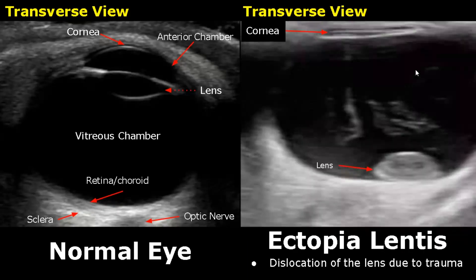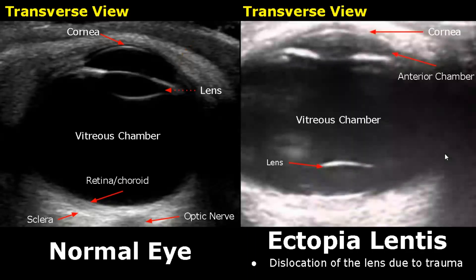Ectopia lentis refers to dislocation of the lens, and it mostly occurs due to trauma. Here we see the lens in the posterior aspect of the vitreous chamber. This is another case of ectopia lentis — we see the lens displaced from its original location.